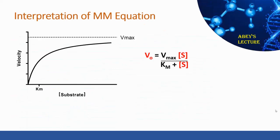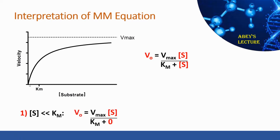Now we can apply the Michaelis-Menten equation to interpret the graph using three scenarios. Scenario one is when substrate concentration is much smaller than Km — at the very beginning of the reaction. Substituting near-zero substrate into the denominator gives V0 equals (Vmax / Km) times [S]. Since Vmax and Km are constants, V0 is linearly proportional to substrate concentration, so as we increase substrate, the enzyme catalyzes the reaction linearly.